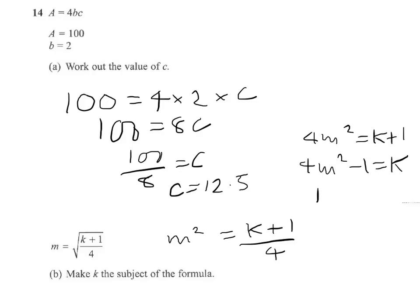And we can write that if we like, we can write it just the other way around. Same thing, really. k equals 4m squared minus 1. We've made k the subject of the equation.